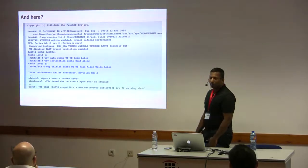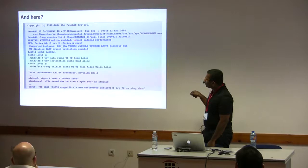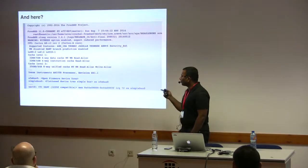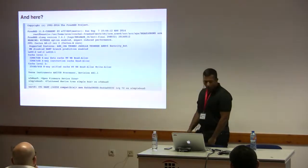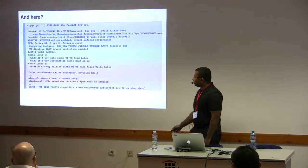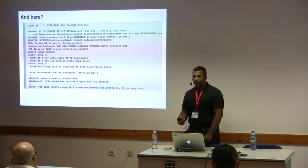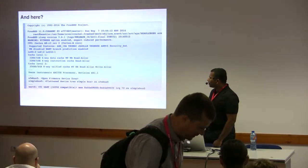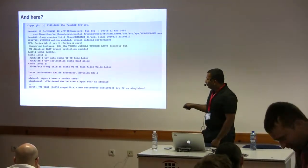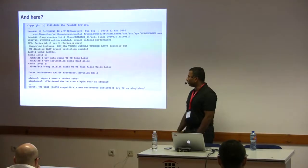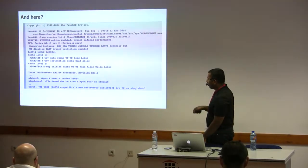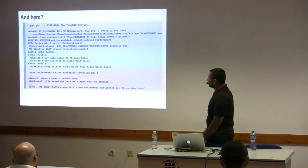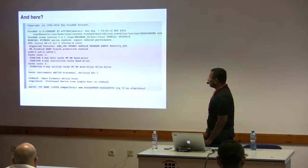The CPU in the BeagleBone Black is a Cortex-A8. It has Thumb2 support, and the output shows more about the cache hierarchy. You can see the Texas Instruments AM3358, which is the SoC in the BeagleBone Black. We'll talk about SoCs and device tree. The last line shows the serial mapping: a 16550 mapped at address 44E09000 at IRQ 72. We'll discuss how this information gets to the kernel.